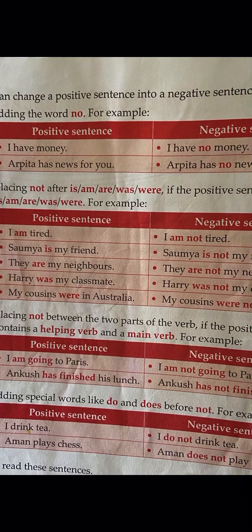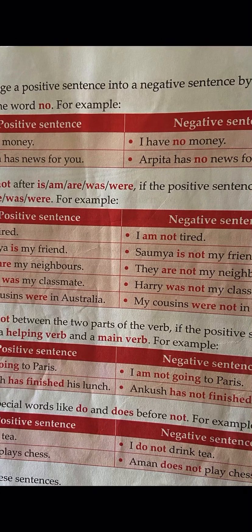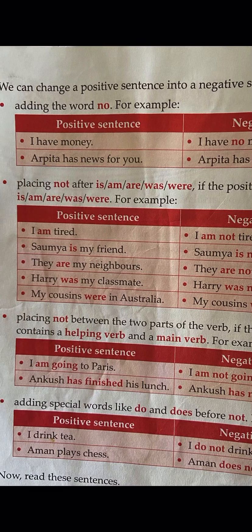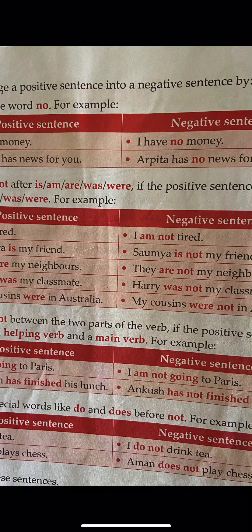Same rule applies for negative sentences with DO, DOES, DID. 'I drink tea' → 'I do not drink tea.' Remember: whenever we use I, we, or you, we always use the plural form of the verb — that is why with I, we use 'do not.' 'Aman plays chess' → 'Aman does not play chess.' Why? Because Aman is singular, so we use 'does not.' And when using 'does not', remove S from 'plays' to make it 'play' — the base form. I hope you are all clear with positive and negative sentences.